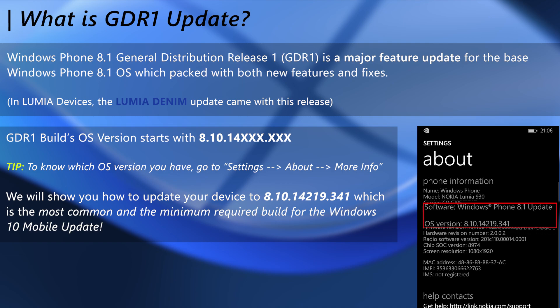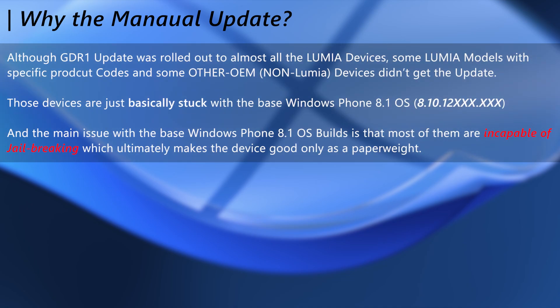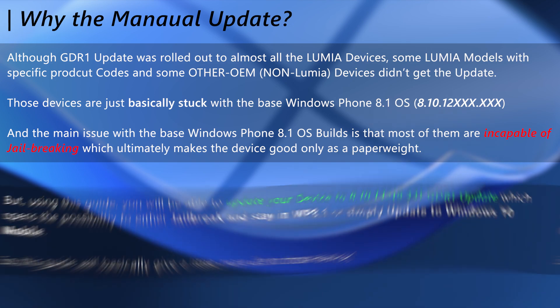In this video we will show you how to update your device to build 8.10.14129.341, which is the most common and the minimum requirement for Windows 10 Mobile update. But why the manual update? Typically this update was delivered to almost all Windows Phone devices by over-the-air updates, but some devices were left out and now the OTA servers are also misbehaving, resulting in those devices getting stuck on base Windows Phone 8.1 without the GDR1 update.